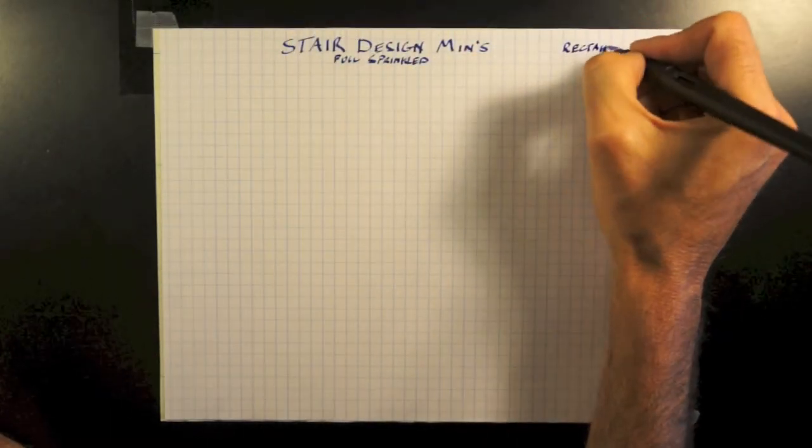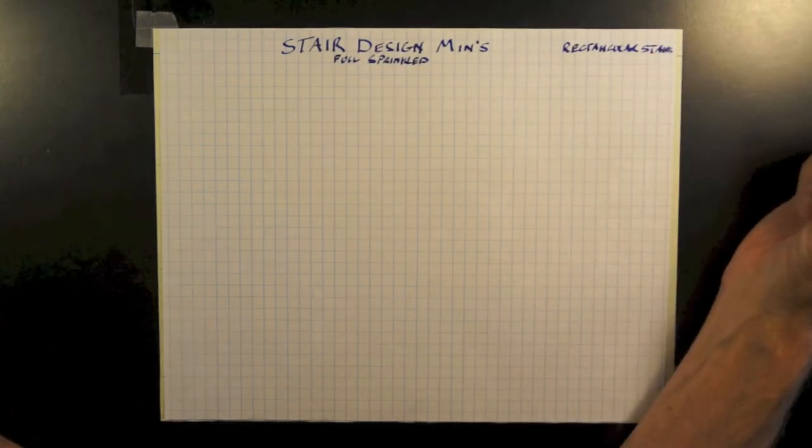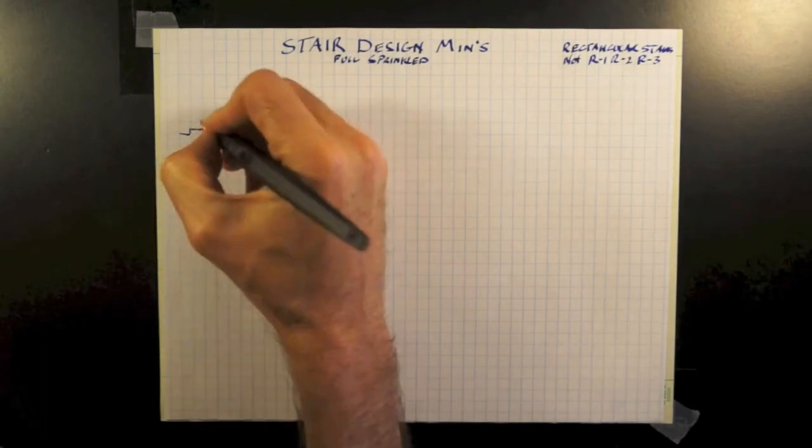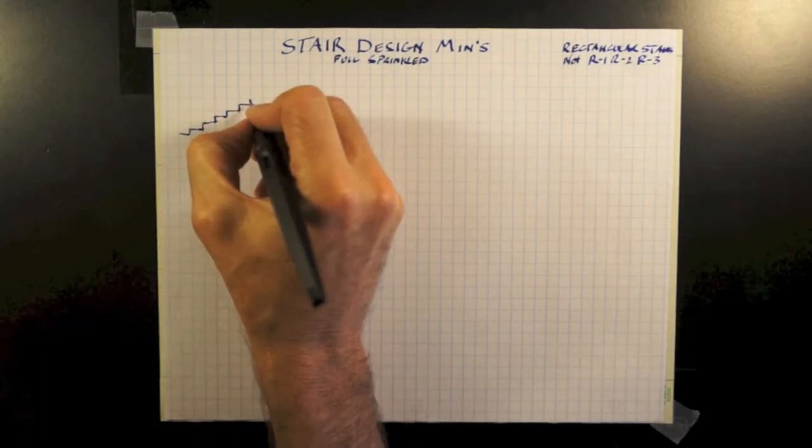This video is on some design stair minimums, assuming a fully sprinkled building, rectangle stairs and not residential, i.e. not R1, R2, or R3.